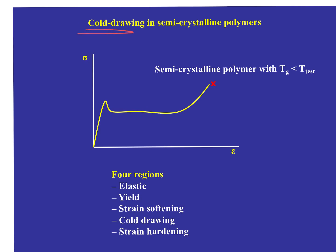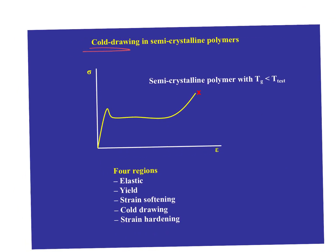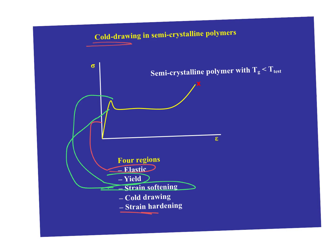This terminology of cold drawing is a hangover from working with metallurgy. In metals, cold drawing involves dislocations, but none of those are present in plastics. We have four behaviors: elastic in the initial region, the yield point, then strain softening — which is the back side of the yield point where stress goes back down — and finally cold drawing and strain hardening. Strain softening refers to the region after yield where the material becomes more easily deformed.